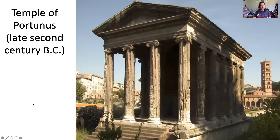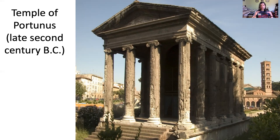They borrowed the arch and vault from the Etruscans. One particular work that illustrates Etruscan influence is this Temple of Portunus. This is actually late Republican, so one of maybe the only works from the Republic that we'll be looking at. This is a Roman temple, but it has some Etruscan elements. You'll notice that it is on this sort of raised platform, and that is something borrowed from the Etruscans. You'll also notice it has a very deep front porch, but there's not a porch that wraps all the way around the building — that too is typical of Etruscan architecture.